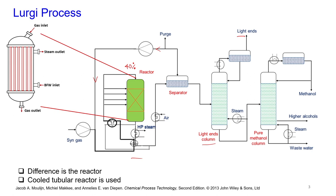The heart of the ICI process is the reactor, which has a catalyst bed indicated by a cross mark. The Lurgy process differs in its reactor design — Lurgy is a company that deals with the licensing of these reactors. In the Lurgy reactor, a cooled tubular reactor is used. The red tubes in the diagram have boiler feed water inserted as inlet, which takes away the heat and generates steam from the outlet.